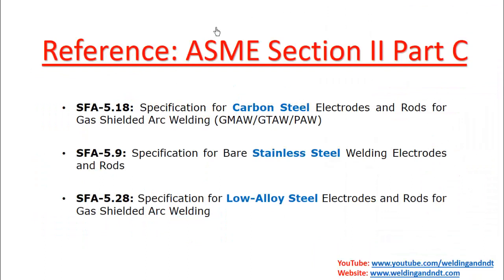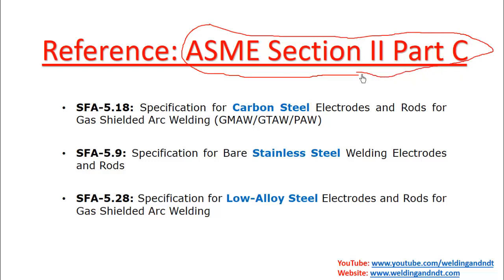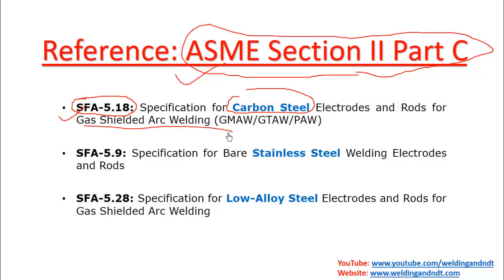The reference for today's content is ASME Section 2 Part C, which is exclusively for electrodes and filler metals. The AWS classification SFA 5.18 is given in ASME Section 2 Part C. SFA 5.18 covers carbon steel electrodes and filler metals used for gas shielded arc welding — GMAW, GTAW, and PAW.